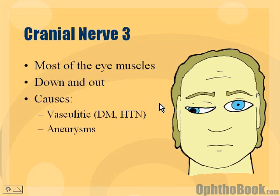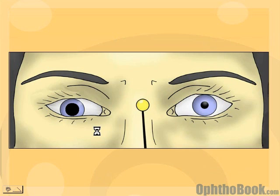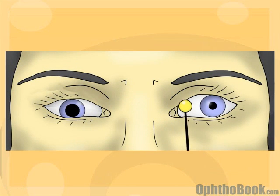So what causes a cranial nerve 3 palsy? Probably the biggest cause of all the palsies is some vasculitic process — either from diabetes or hypertension. Basically you have a mini-stroke of one of these cranial nerves and the nerve goes out. For cranial nerve 3, you also need to think about aneurysm.